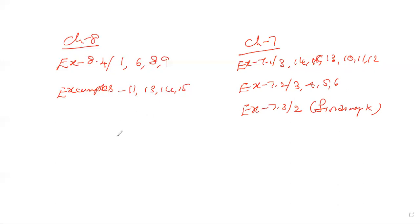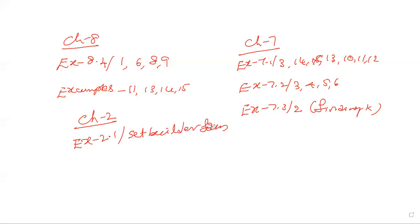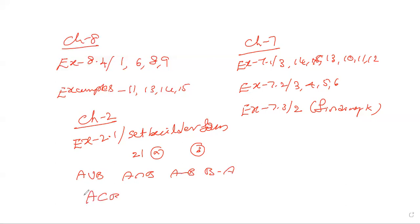Chapter number 2, exercise 2.1 — practice set builder form and the operations: A union B, A intersection B, A minus B, B minus A, A subset B, B subset A, delta B. Practice Venn diagram problems as well — these carry 4 marks coverage.